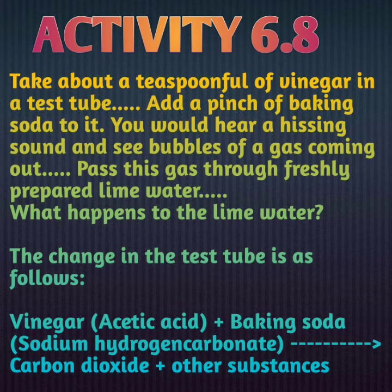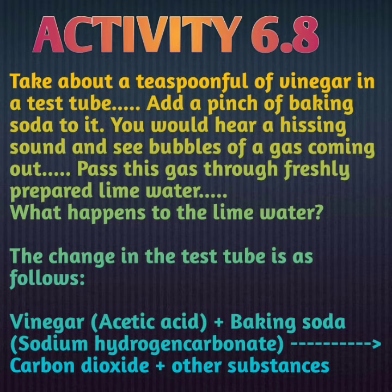Let's see one more activity based on chemical change. Take about a teaspoon full of vinegar in a test tube and add a pinch of baking soda to it. You would hear a hissing sound — जब आप vinegar में baking soda डालेंगे तो एक hissing sound होगी, gas form हो जाती है, और आपको gas के bubbles आते हुए दिखेंगे. Pass the gas through freshly prepared lime water — इस gas को pipe के through lime water के साथ react करवाएंगे, means चूने के पानी के साथ.